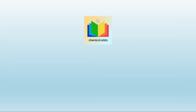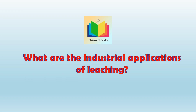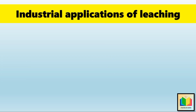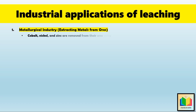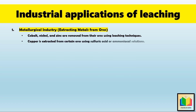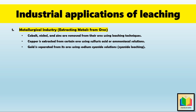What are the industrial applications of leaching? The first industrial application is the metallurgical industry, for extracting metals from ores. Leaching is widely used in metallurgy to extract valuable minerals from ores. Cobalt, nickel, and zinc are removed from their ores using leaching techniques. Copper is extracted from certain ores using sulfuric acid or ammoniacal solutions. And gold is separated from its ores using sodium cyanide solutions, which is also called cyanide leaching.